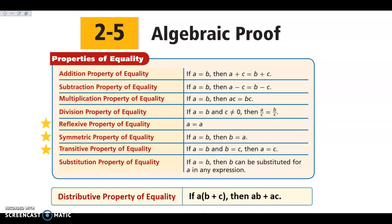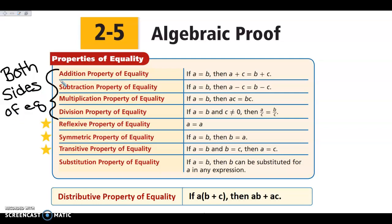Let's look at the first four: the addition, subtraction, multiplication, and division properties. These four properties are used when something is done to both sides of the equation. Please make a note that this is done to both sides of the equation for these four. If I want to add 12 to both sides, that is the addition property of equality. If I want to subtract 7 or subtract 3x from both sides, that is subtraction. If I am multiplying or dividing both sides by a number, those are those properties.